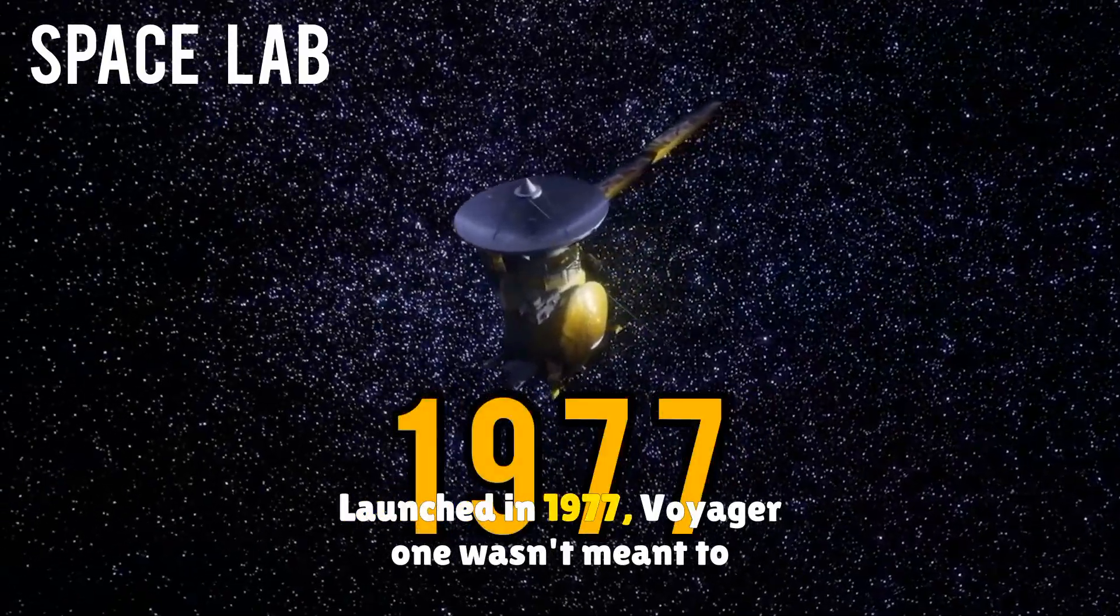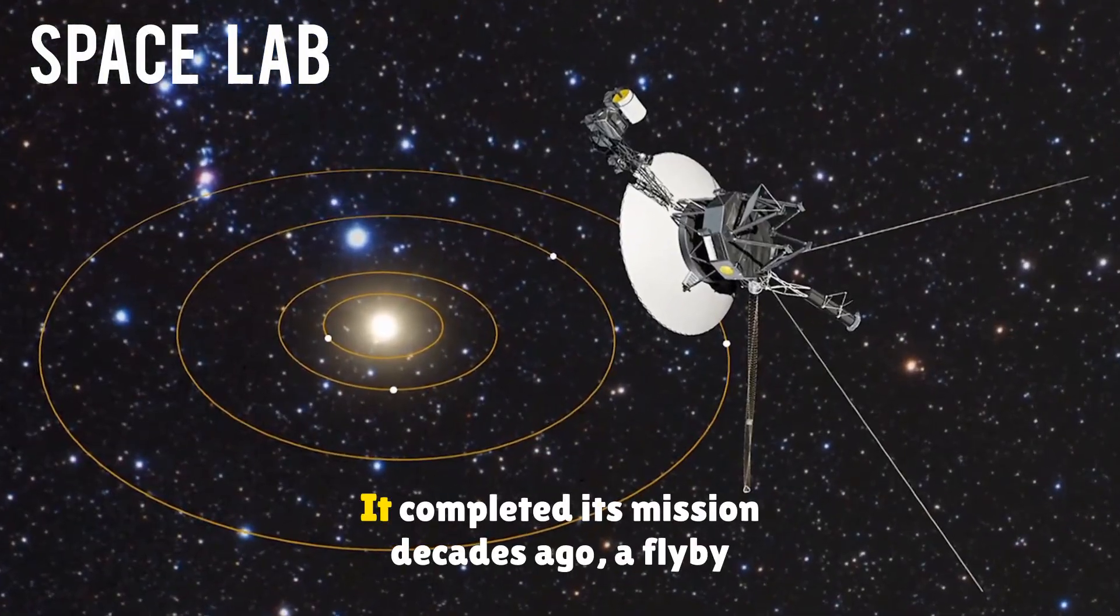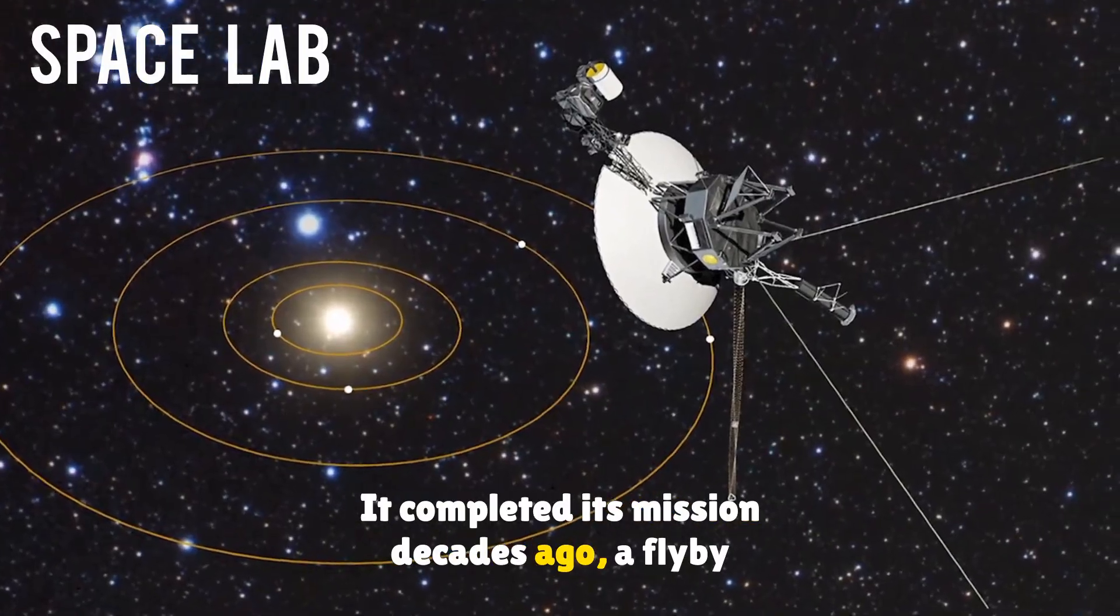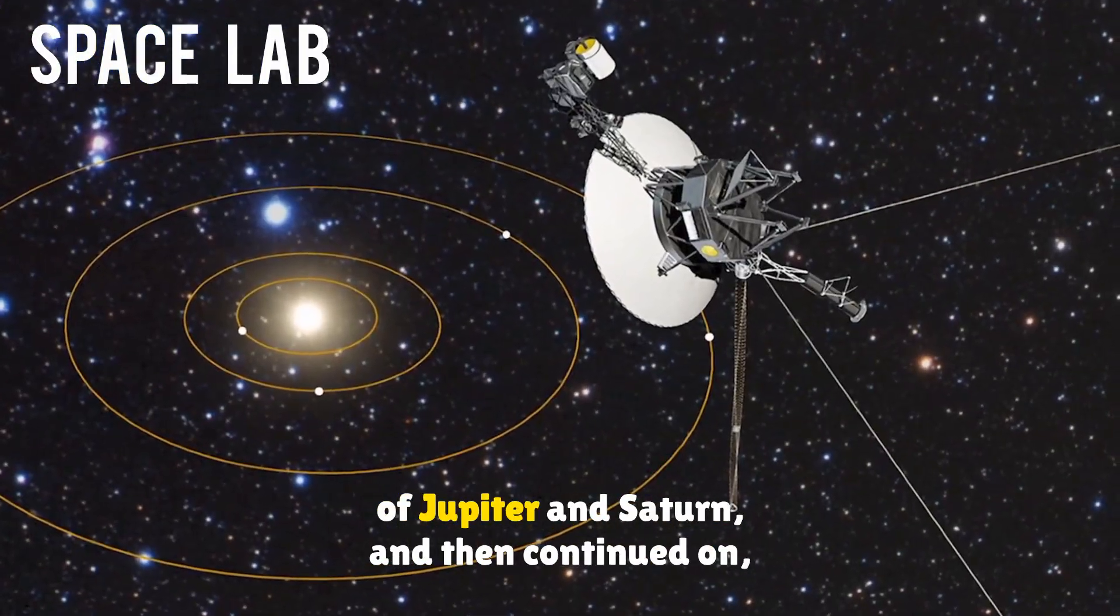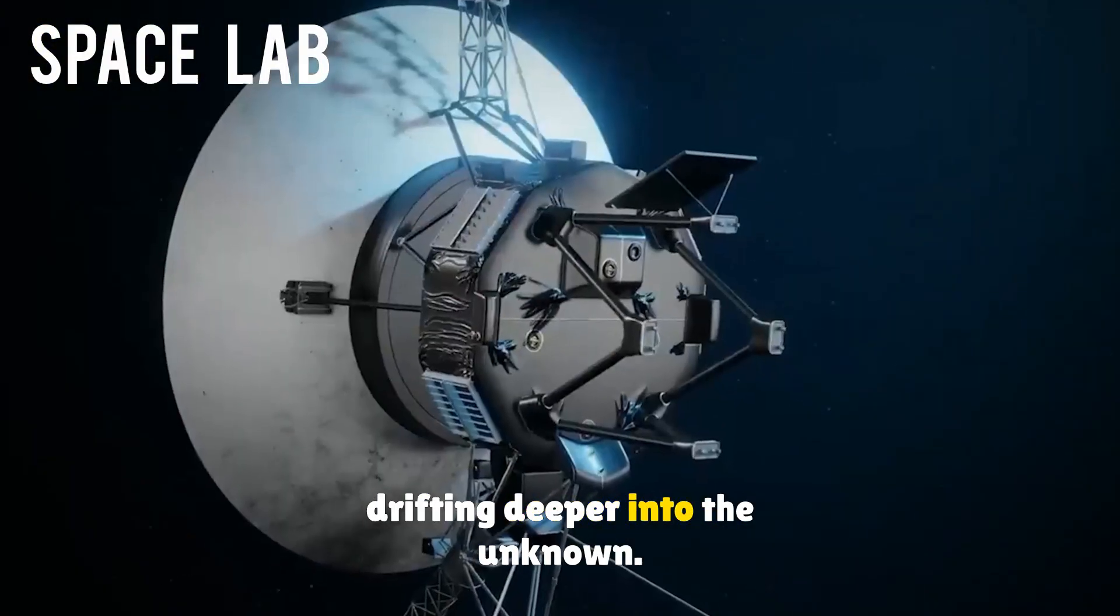Launched in 1977, Voyager 1 wasn't meant to go this far. It completed its mission decades ago, a flyby of Jupiter and Saturn, and then continued on, drifting deeper into the unknown.